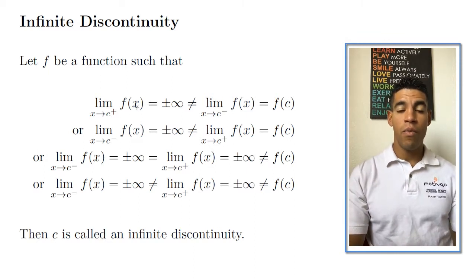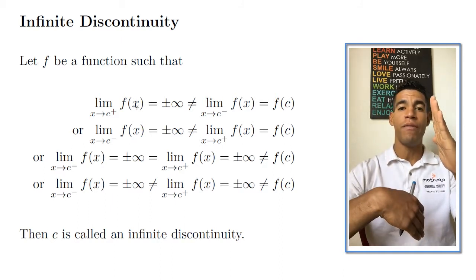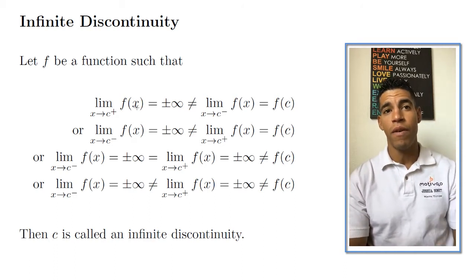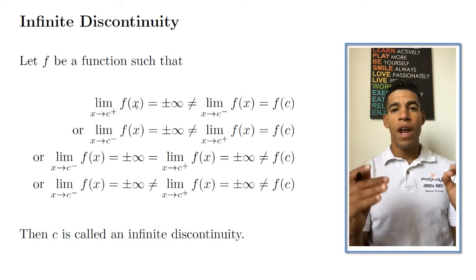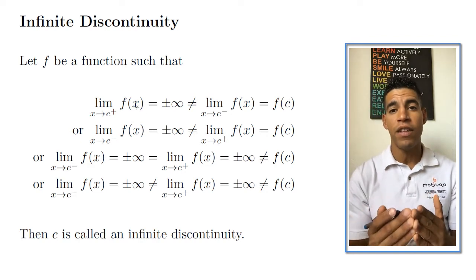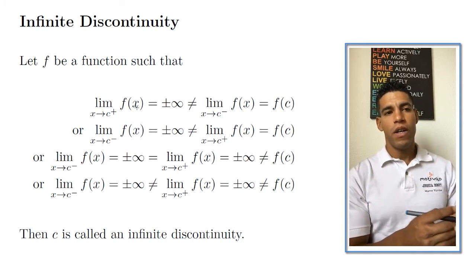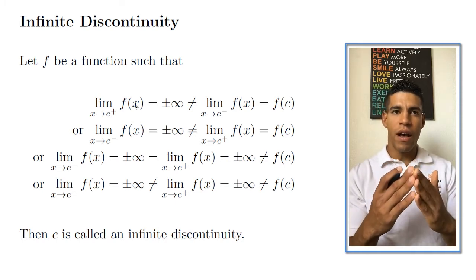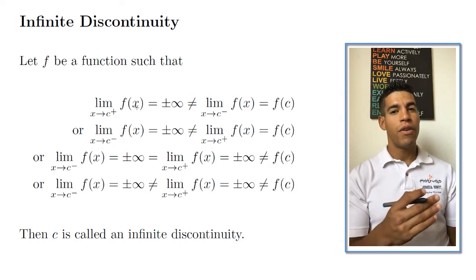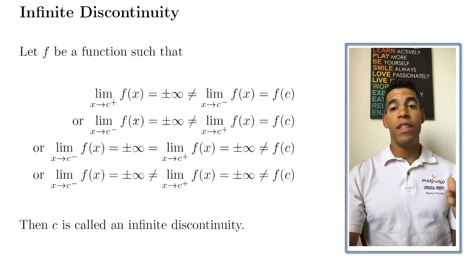The fourth condition is when one limit is approaching positive infinity and the other is approaching negative infinity, and neither can equal f(c). Whenever the limit is infinity it can never equal f(c), because f(c) is a constant — a real value — and infinity is not a real number. So whenever we are approaching a specific infinity, you cannot equate that to f(c).